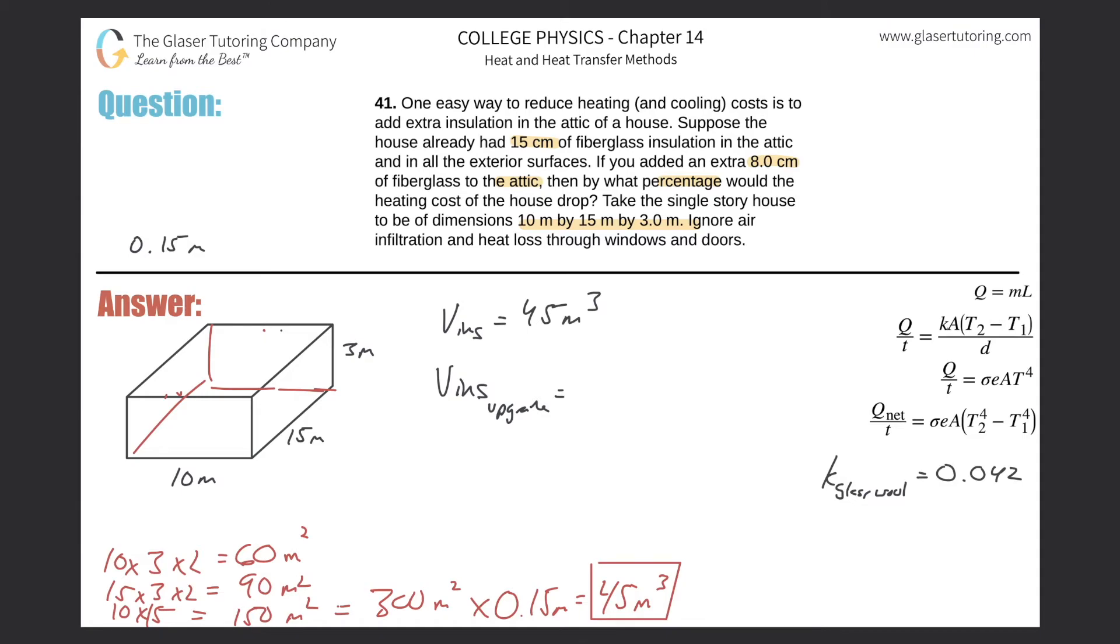Plus now to just this area at the top, I'm going to add 8 centimeters. So basically now I got to take that square area of the ceiling, which is the floor of the attic, 150, and then multiply that now by the additional depth of insulation. So that's going to be 0.08.